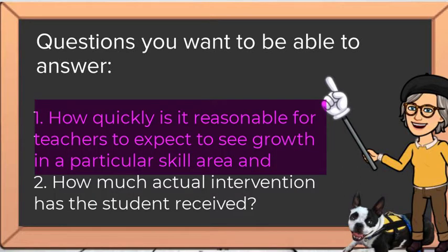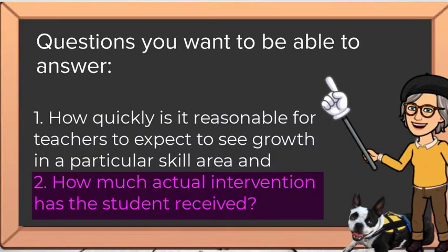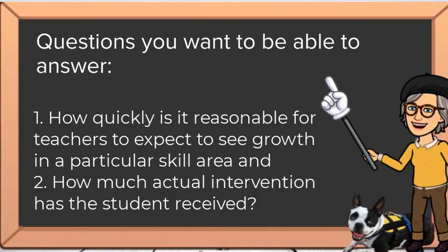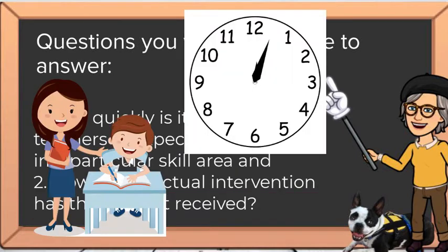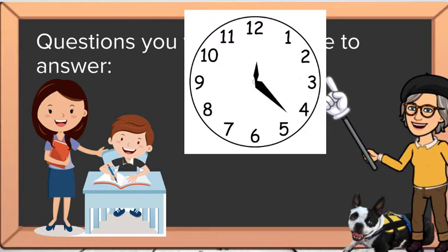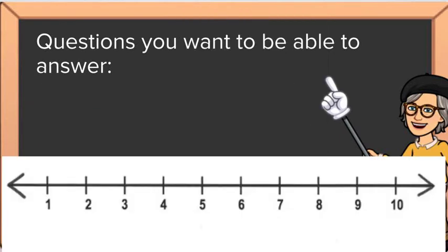One: how quickly is it reasonable for teachers to expect to see growth in a particular skill area? And two: how much actual intervention has the student received? In all cases, it's important that the student is really receiving focused instruction to address the skill deficits that teachers want to see improve over time. The more difficult the skill being tested, the longer the time between testing so that students can receive targeted interventions.